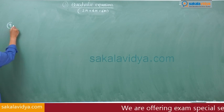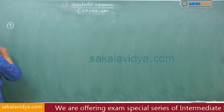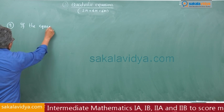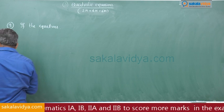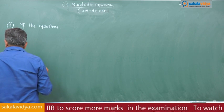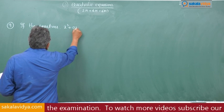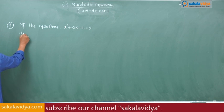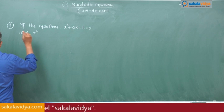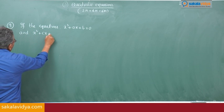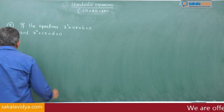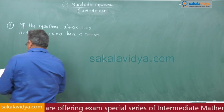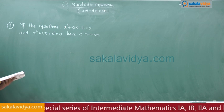Ninth problem: If the equations x square plus Ax plus B is equal to 0 and x square plus Cx plus D is equal to 0 have a common root...